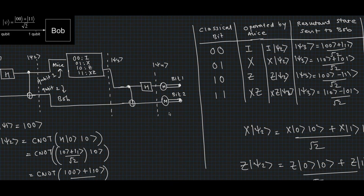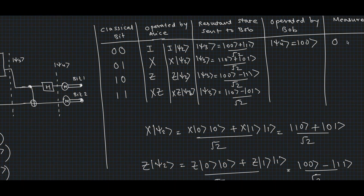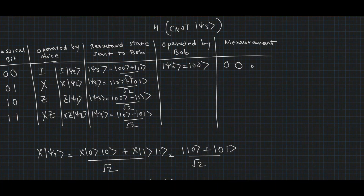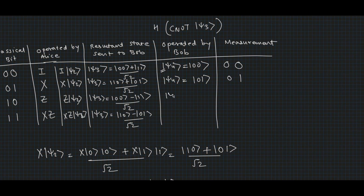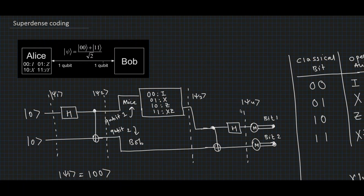When Bob measures ψ₄ he gets two bits as 0 and 0, so Alice has successfully sent the classical bits 00 by operating on her single qubit. Similarly, for the second case, applying H and CNOT on ψ₃ gives ψ₄ = |01⟩, which upon measurement gives classical bits 01. For the third and fourth cases we get ψ₄ = |10⟩ and ψ₄ = |11⟩, which upon measurement give classical bits 10 and 11 respectively.